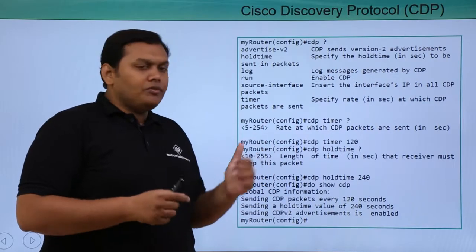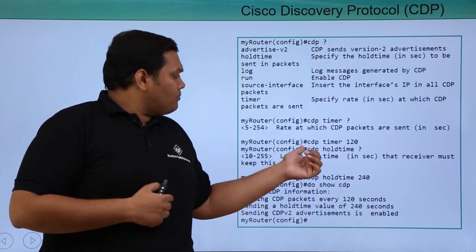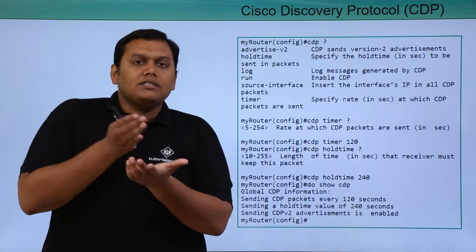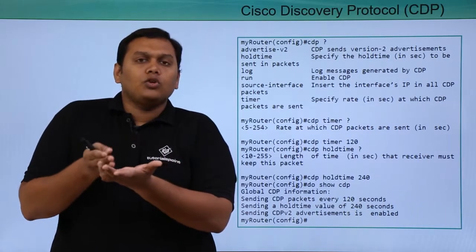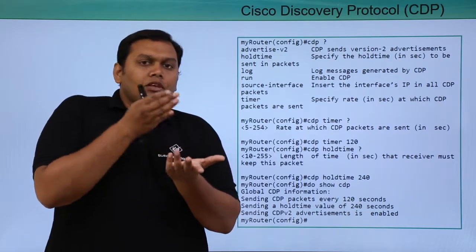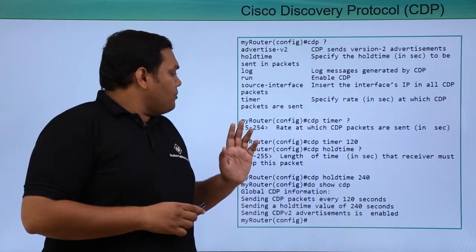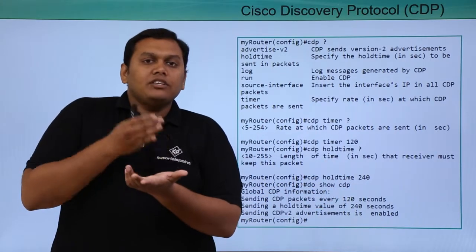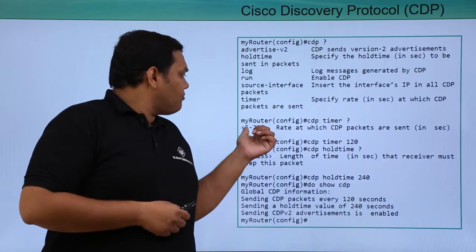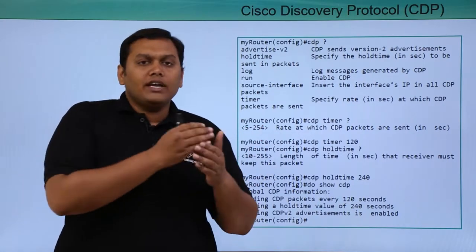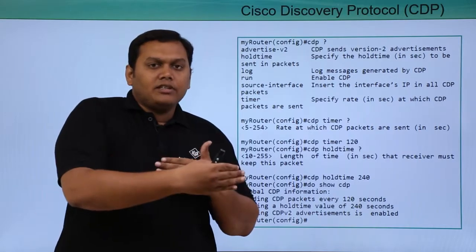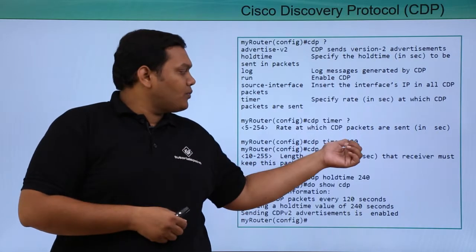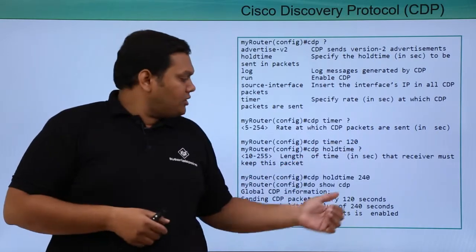You can see on our router that if you enter 'CDP timer 120', the timer will be set to 120 seconds, so the hold time will be 120 seconds. The CDP hold time can also be changed — here it is changed to 240. The range is between 5 to 254. So, the advertisement send time to neighboring devices is changed to 120 and the hold time is changed to 240.